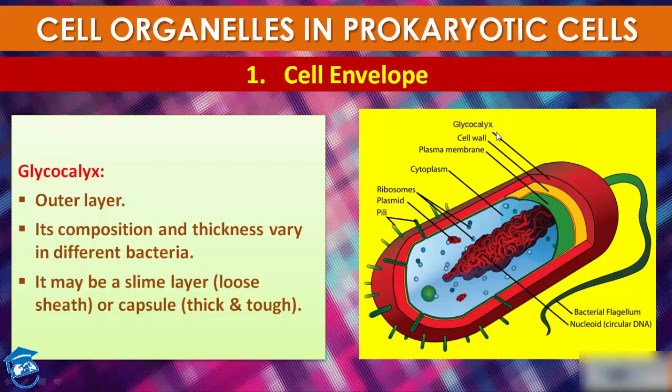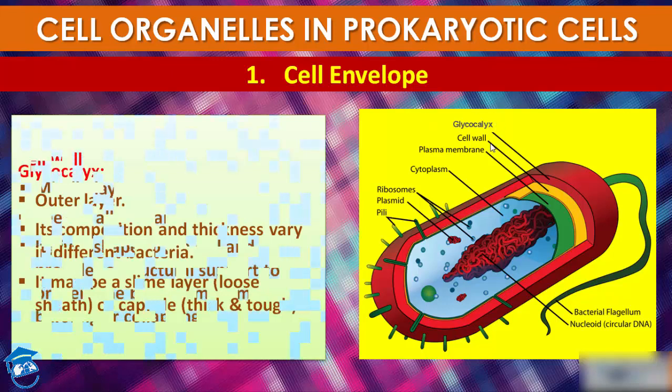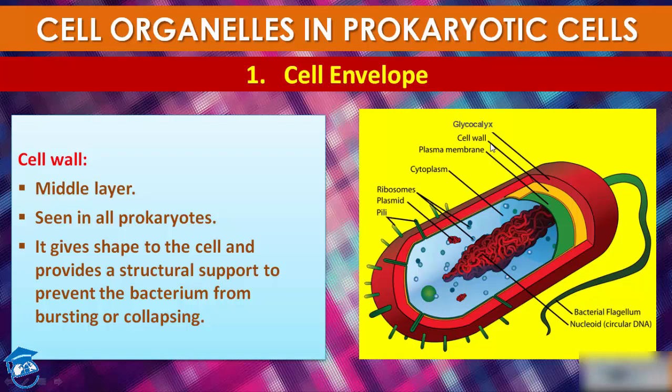The cell wall is the second, or middle, layer. Cell wall determines the shape of the cell and is seen in all prokaryotes. It provides strong structural support to prevent the bacteria from bursting and collapsing.